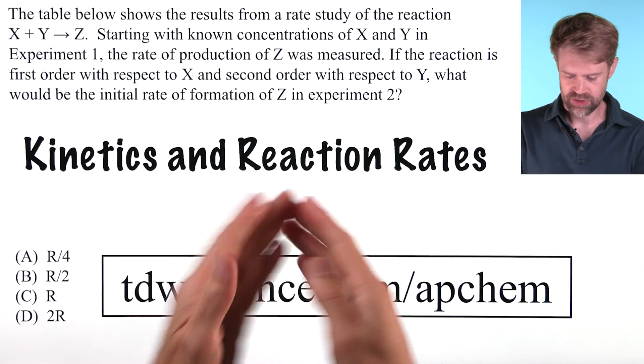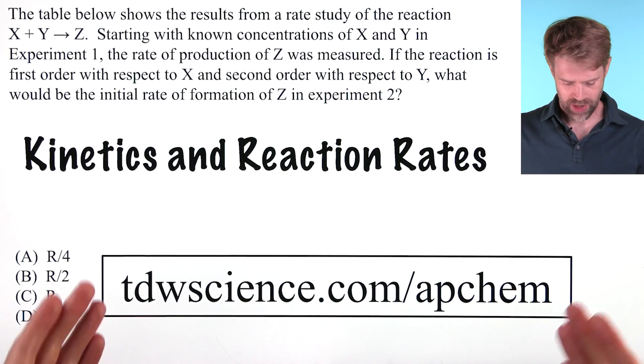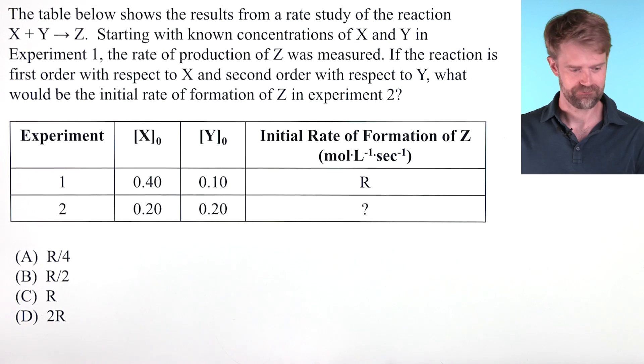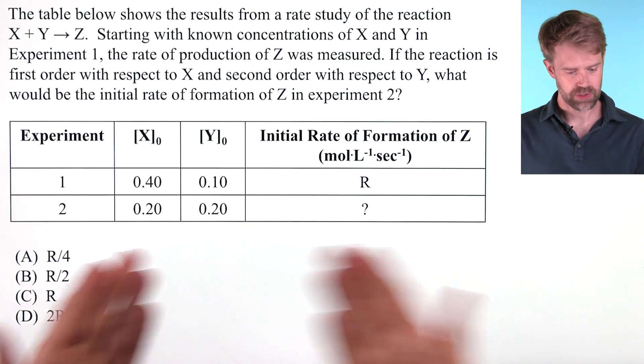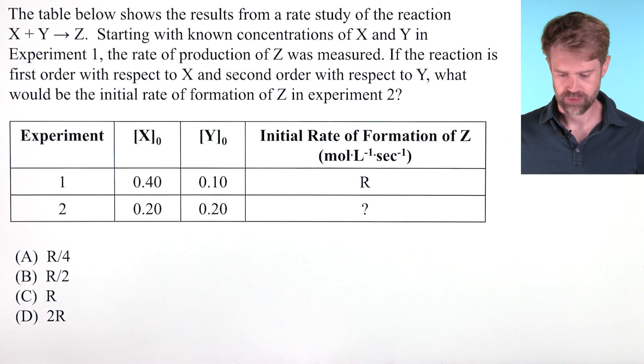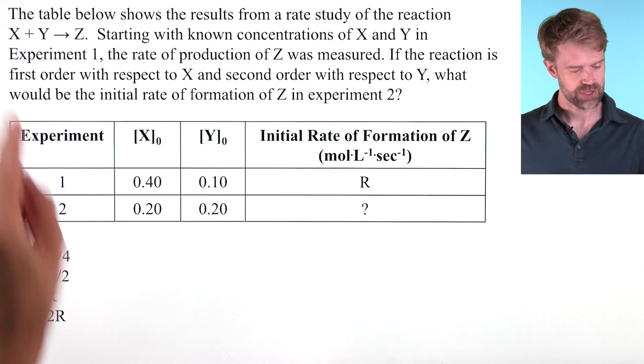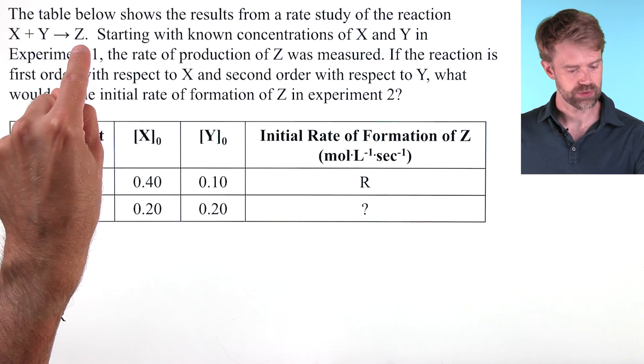This problem is about kinetics and reaction rates. You can find more AP Chem resources right here. The table below shows the results from a rate study of the reaction X plus Y yields Z.